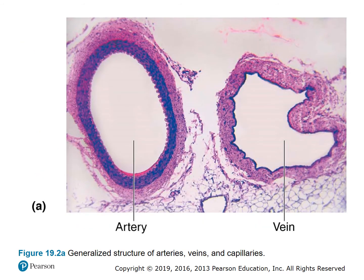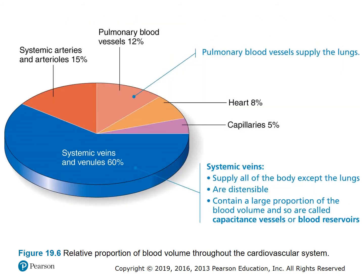Figure 19.2a shows a cross-section of the artery and the vein. Notice the thicker tunica media in the artery, and also notice that veins are more collapsed. Figure 19.6 shows the relative proportion of blood volume throughout the cardiovascular system. Systemic veins and venules contain about 60% of the blood supply. Systemic veins supply all of the body except the lungs and contain a large proportion of blood volume, so they are called capacitance vessels or blood reservoirs.